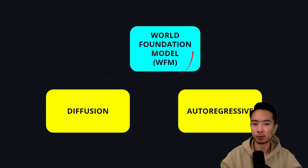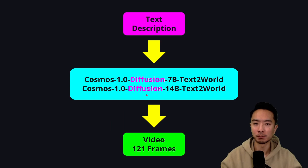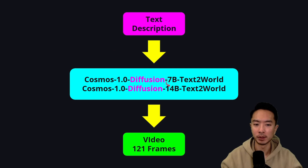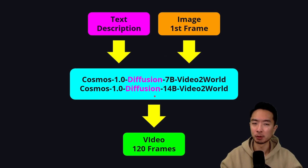There are two main types of World Foundation Models: Diffusion and Autoregressive. The Diffusion models take a text description as input and output a video of 121 frames. The specific ones are the 7B and 14B text-to-world models. There's also a second group of Diffusion models — the 7B and 14B Video-to-World — which take two inputs: a text description and the image of the first frame, with an output of 120 frames of video.